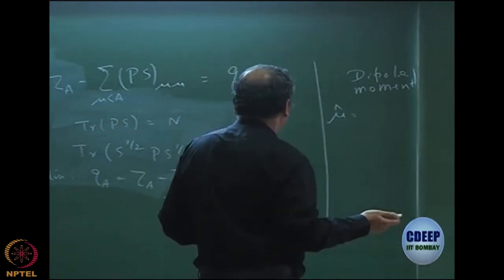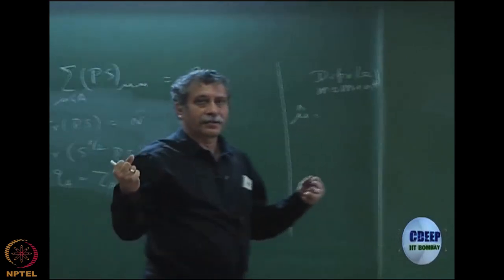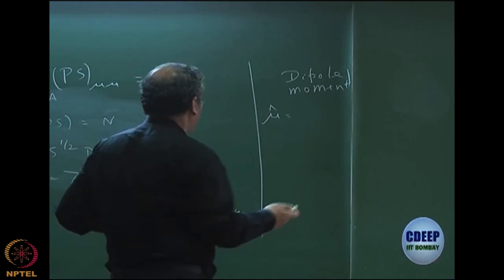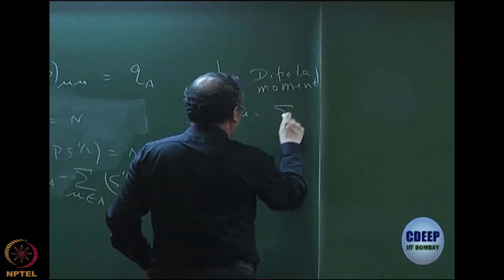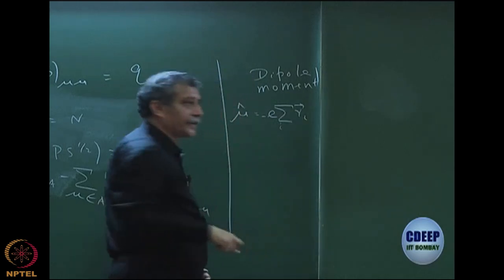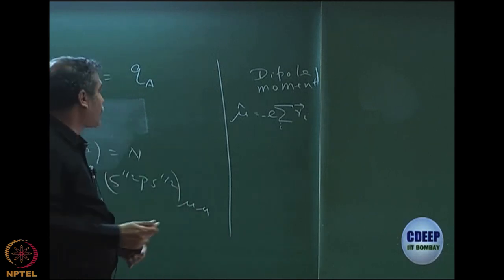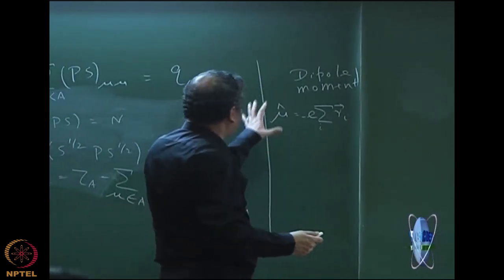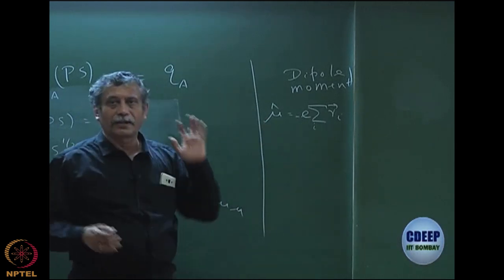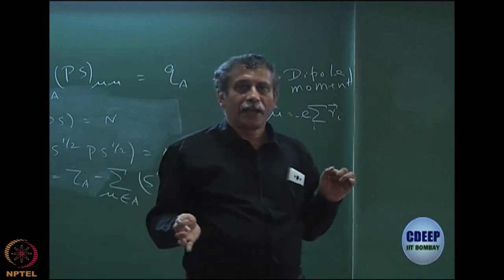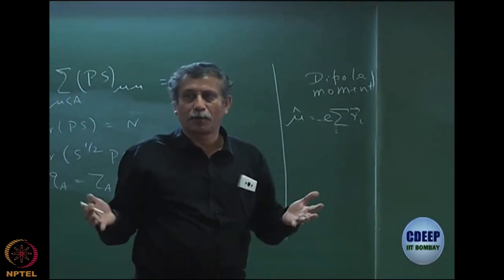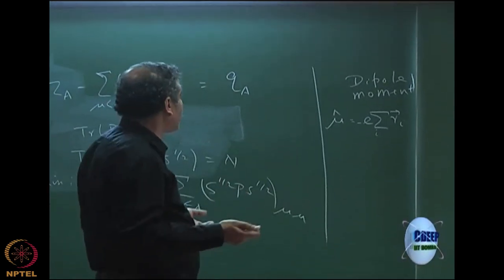If we write the electronic part, the nuclear part is a fixed constant that we can add later. The electronic part is what we are really interested in — it is basically minus e times the sum over R_i, where R_i is the position vector. If I take the expectation value of the Hartree-Fock wave function with respect to this operator, I get the electronic dipole moment. Then I add to it the nuclear contribution, just as in Born-Oppenheimer we add the nuclear energy.